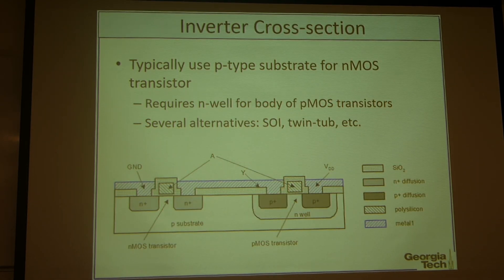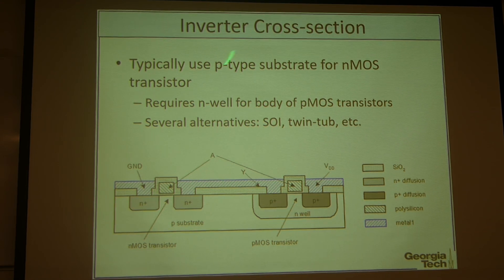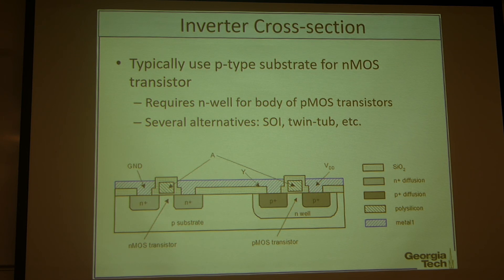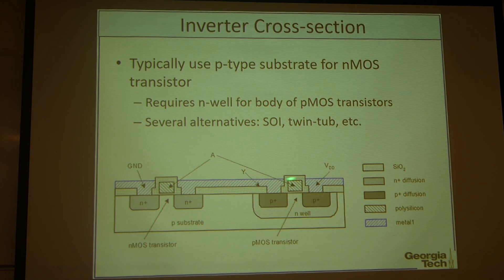This is our finalized CMOS inverter structure. Typically, we use a P-type substrate silicon wafer for the N-type MOSFET. This is our CMOS inverter, so we have a complementary P-MOSFET next to the N-MOS, which needs an N-well to control the channel. To control the P-type channel, we need to have an N-well here. There are several alternatives, like silicon-on-insulator wafer or twin-well structures.